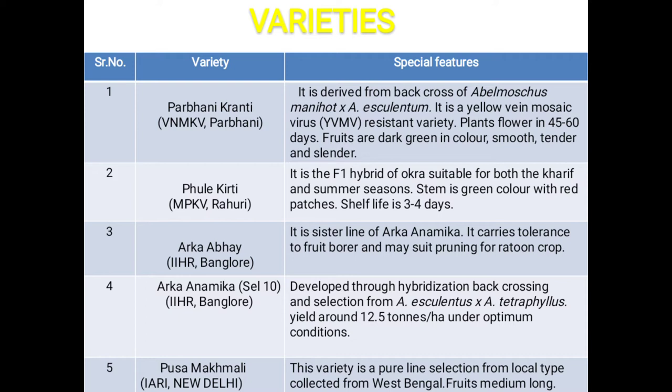Next is Pusa Makhmali, developed by IARI New Delhi. This variety is a pure line selection from local type collected from West Bengal. Fruits are medium long.